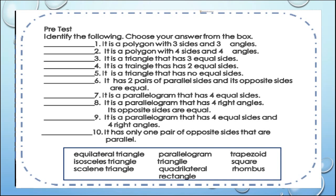Number 5: It has 2 pairs of parallel sides and its opposite sides are equal. Number 7: It is a parallelogram that has 4 equal sides. Number 8: It is a parallelogram that has 4 right angles. Number 9: It is a parallelogram that has 4 equal sides and 4 right angles.